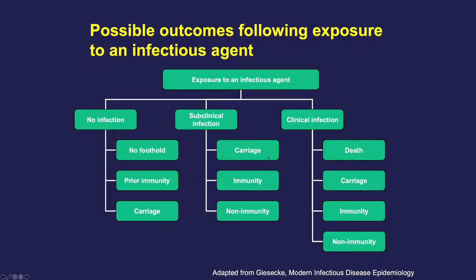The second possible outcome is subclinical infection. In this situation, there could be an infected carrier state, a chronic infection state, long-term immunity, or no immunity at all — there are many agents that don't confer immunity. When infection results in symptoms, these could be very severe and even result in death. When death does not occur, the individual could become a carrier, could develop immunity, or not develop immunity, depending on the agent. The infectious dose — the amount of agent a person is exposed to — can also be an important driver of severity and perhaps immunity.